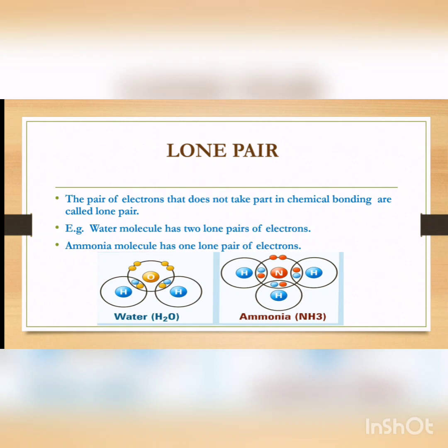If you see the diagram, the water molecule's lone pairs are represented by the yellow dots — there are two lone pairs, that is four electrons. And the ammonia molecule has one lone pair shown with the red dots. When these lone pairs are shared — transferred to another atom like a hydrogen ion or another proton — the bond so formed is called a coordinate bond.